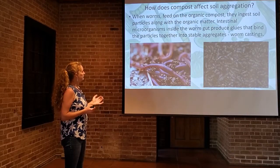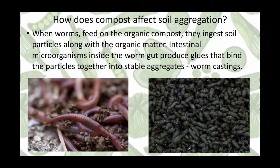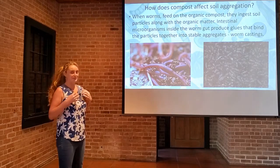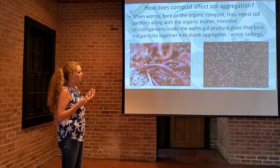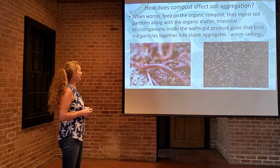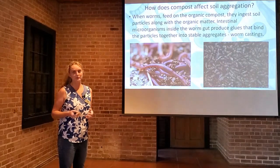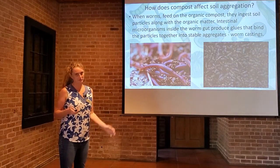How does compost affect this? Well, when worms — remember we talked about vermicomposting — when worms feed on the organic compost, they ingest soil particles along with the organic matter in your compost pile that they are trying to digest. Intestinal microorganisms inside the digestive system of the worm actually produce glues that bind those particles together as they come out as worm castings, or worm poop. So the worms themselves are gluing a lot of particles together as they digest your compost pile.